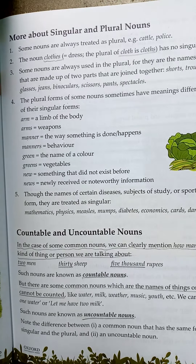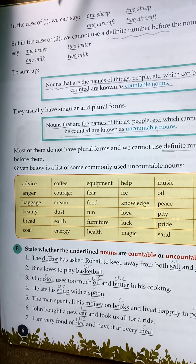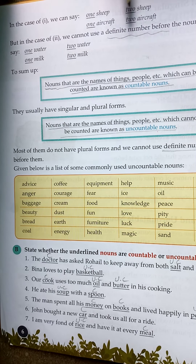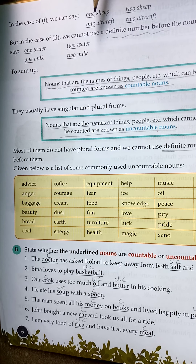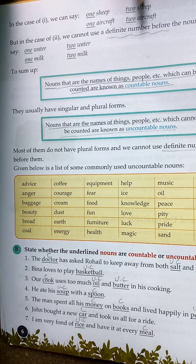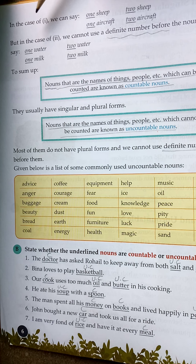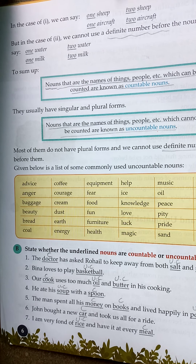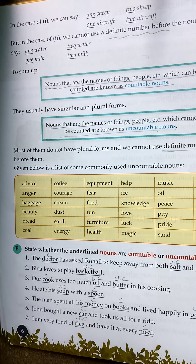Next page, page number 6. In the case of countable nouns, we can say one sheep, two sheep; one aircraft, two aircraft. These are countable — we can say one sheep, one aircraft.